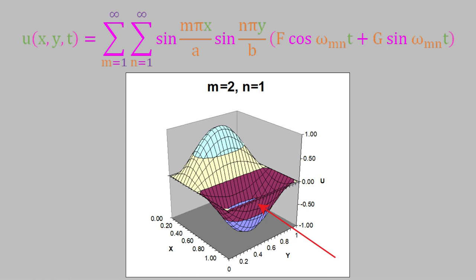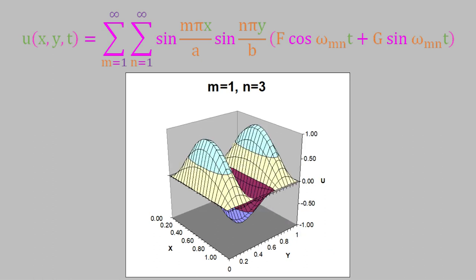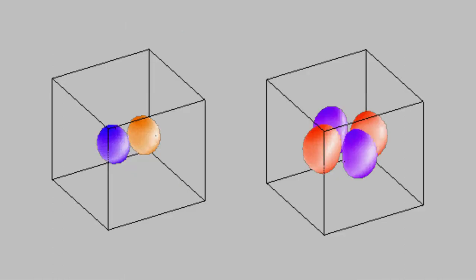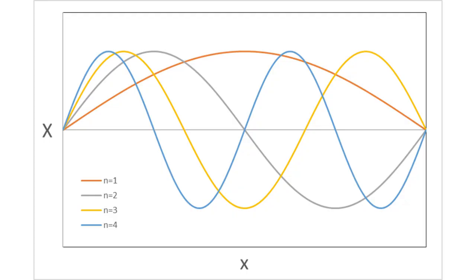Similarly, when m is 1 and n is 3, we see no node on the x-axis but two nodes on the y-axis. When both m and n equal 2, there is one node on both the x- and y-axis. These same ideas apply in three-dimensional systems, where waves can have nodes along three different coordinates, and this is part of what gives orbitals their distinctive shapes. It's important to remember that the reason orbitals have these shapes is because electrons in orbitals have the properties of waves, so they're described by wave equations like the ones we've been looking at.